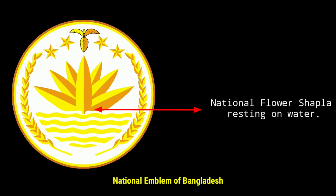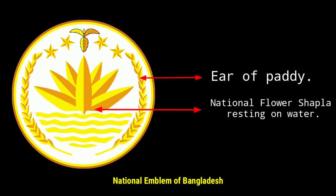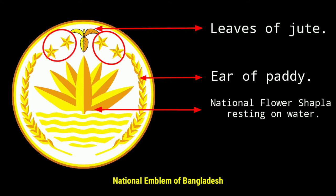According to the constitution of Bangladesh, the national emblem shall be the national flower shapla resting on water, having on each side an ear of paddy and being surmounted by the three connected leaves of jute with two stars on each side of the leaves, as specified in the third schedule.